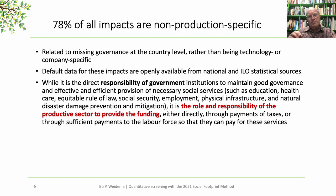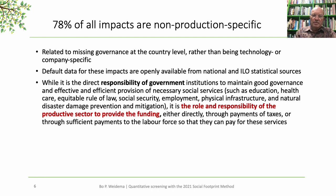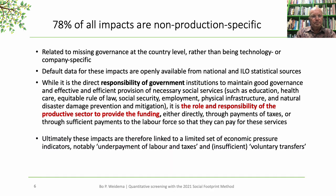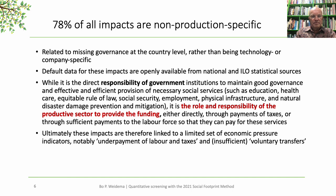Default data for these impacts are openly available from national and international statistical sources. While it is the direct responsibility of government institutions to maintain good governance and effective provision of necessary social services, it is the role and responsibility of the productive sector to provide the funding — either directly or through payment of taxes, or through sufficient payments to the labor force so that they can pay for these services themselves. In that way, we are making 78% of the impacts related to production, even though the responsibility and the actions that need to be done are, in principle, the responsibility of governments. Ultimately, these impacts can therefore be linked to a limited set of economic pressure indicators, notably underpayment of labor and taxes and insufficient voluntary transfers.